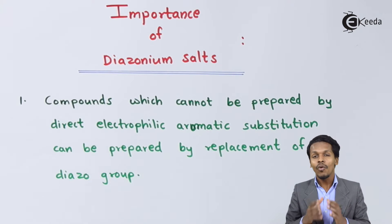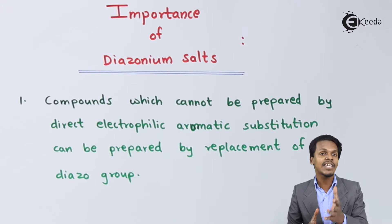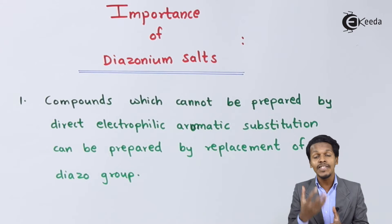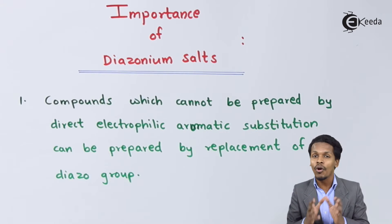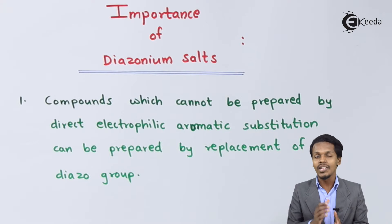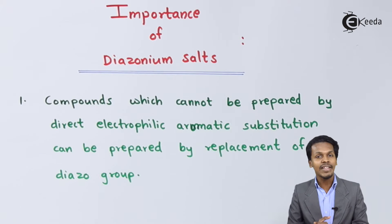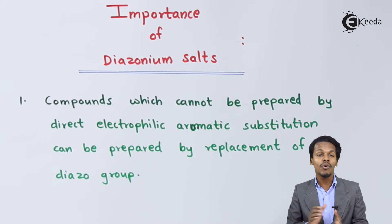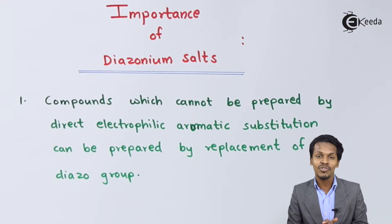That is the reason we have to consider the diazonium salt — that is benzene diazonium salt — and because of the further reaction we could easily prepare the corresponding compound or easily introduce the corresponding group on the benzene ring. This is the importance of benzene diazonium salt regarding the first point, as we have also discussed in our previous lectures.